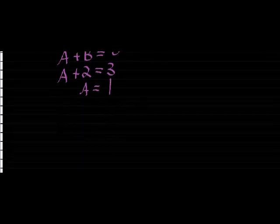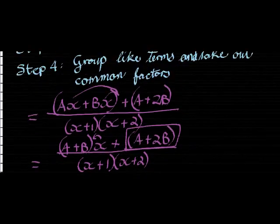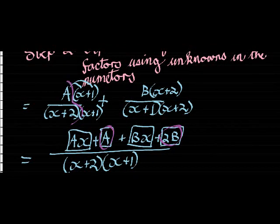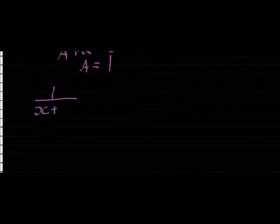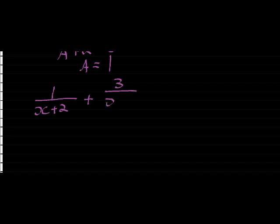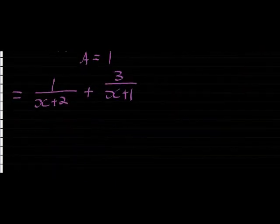And there we have it. A was over x plus 2, and b was over x plus 1. So we get 1 over x plus 2 plus 2 over x plus 1. That is the partial fractions — I've separated it into partial fractions. And just go see at the beginning: 1 over x plus 2 and 2 over x plus 1. Let's look at a few more examples and then you should be fine with it.